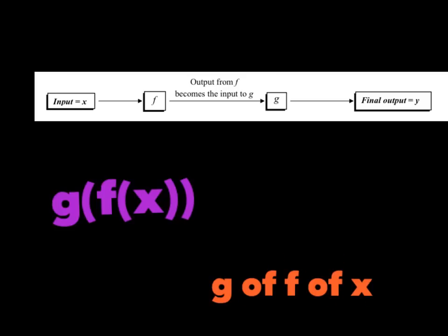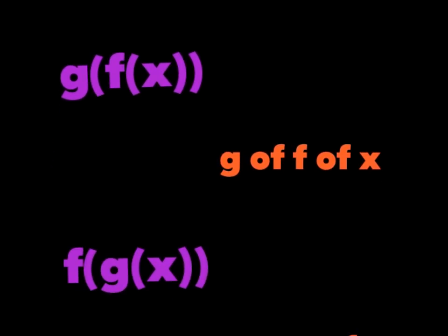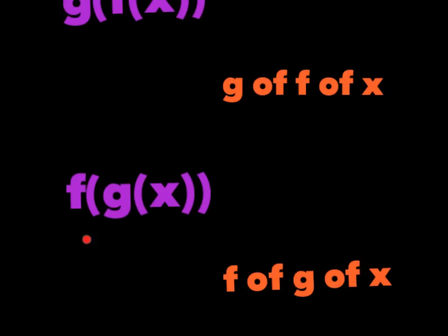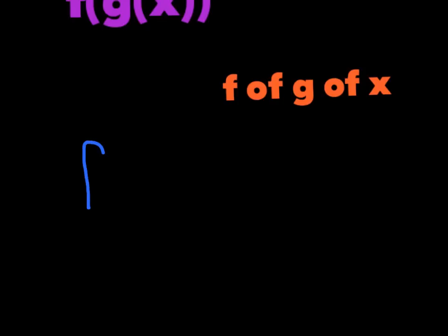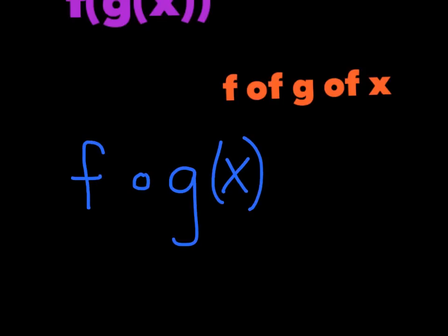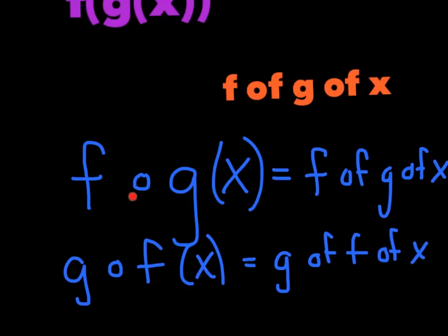Do you notice these 'of's? Every time I see a parenthesis I'm saying the word 'of': g of f of x. I can also write this another way: f of g of x — f parenthesis, g parenthesis, x. There's also a composed symbol, which means the same thing. Reading f composed with g of x is the same as f of g of x. Going the other way reads g of f of x. This symbol means 'composed' or 'composition.'